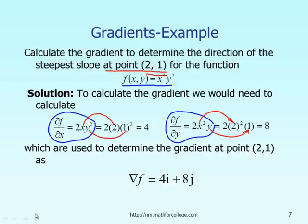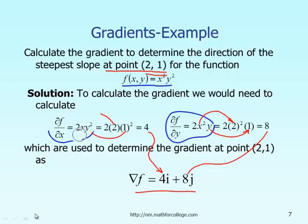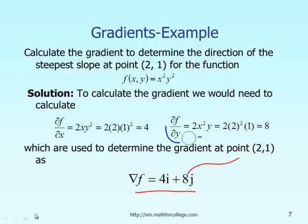So the gradient of f in this example, evaluated at the current point x equal to 2 and y equal to 1, is given as the vector 4i plus 8j. That is the numerical value for the gradient of the function evaluated at the current point, which should help you figure out the gradient of a given function having two variables evaluated at a specific point.